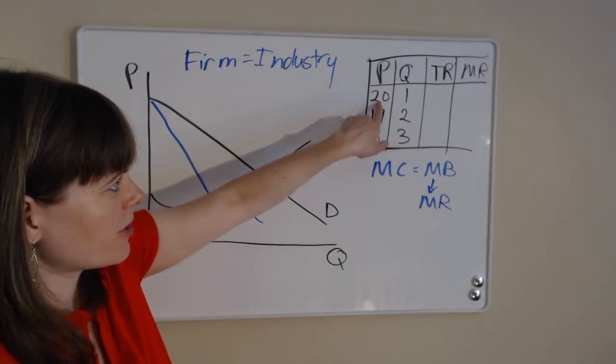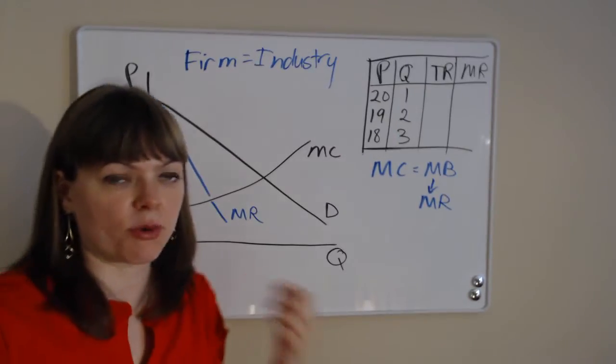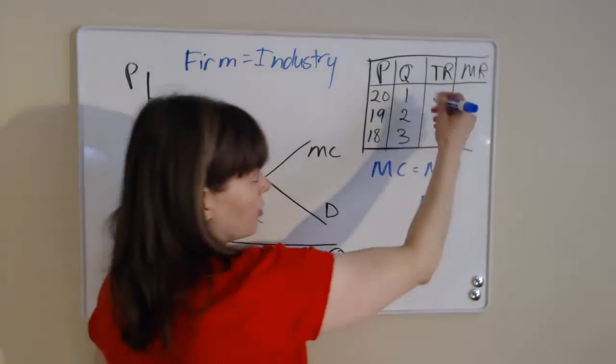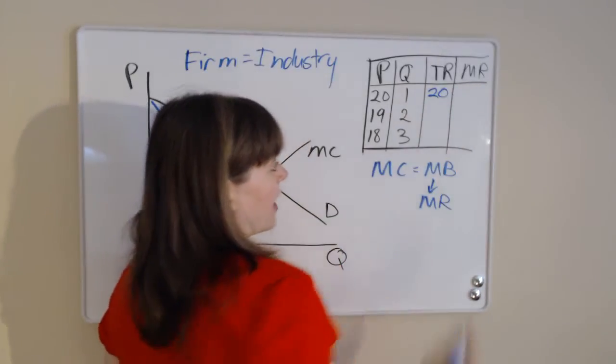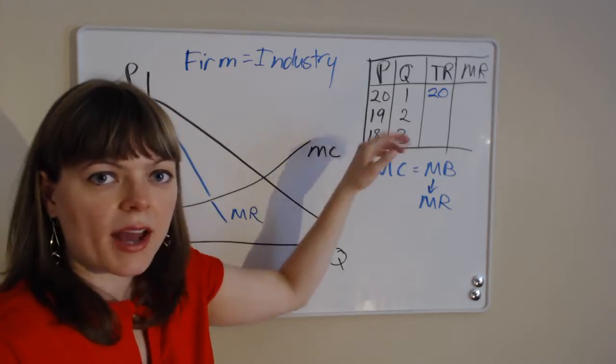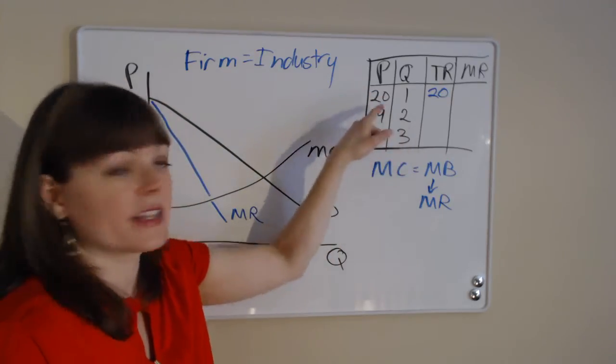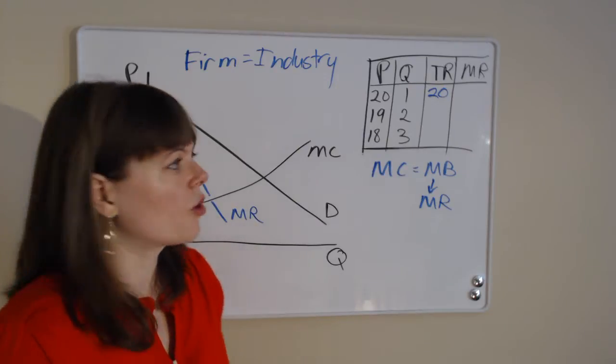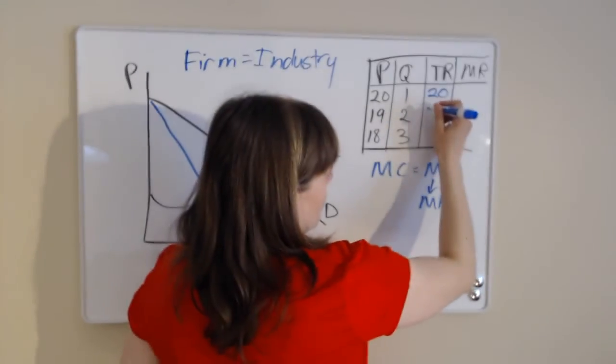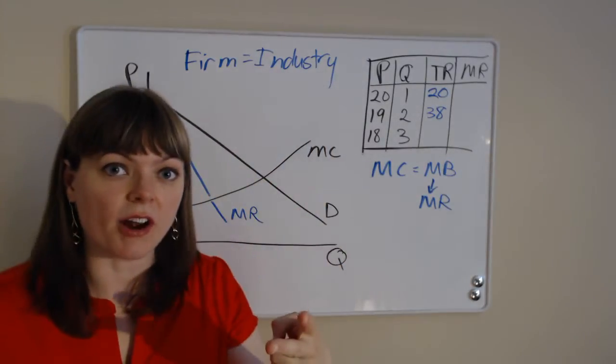So why does it have that shape? Well, for the first person, we noted that the first person was willing to pay $20 for this product. So the total revenue with just one item sold is going to be $20. If we want to sell two items, we're actually going to have to lower the price to $19 because that second person is not willing to pay $20, they'll only pay $19.